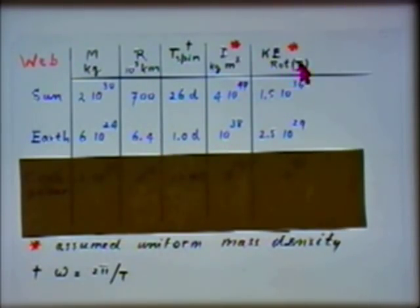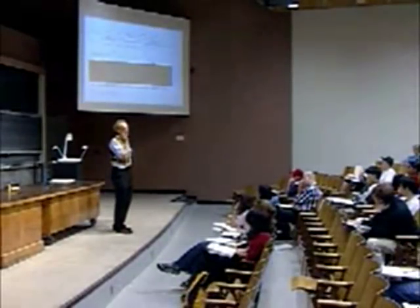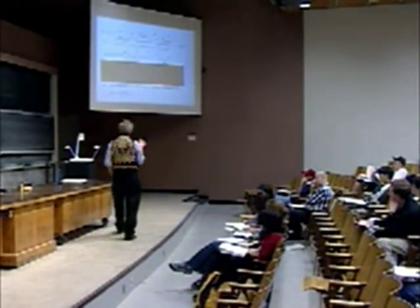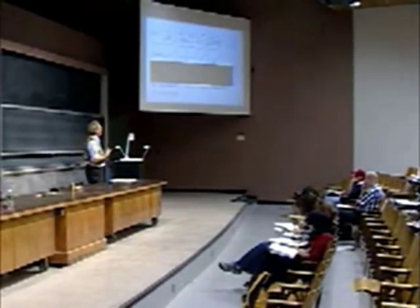The sun's rotational KE is about 1.5×10³⁶ J. Our great-grandparents were puzzled about where solar energy came from, and conceivably it could come from the sun spinning down. But since the sun produces 4×10²⁶ watts, tapping rotational KE would last only 125 years—so that idea is completely ruled out. We now know the energy is nuclear.